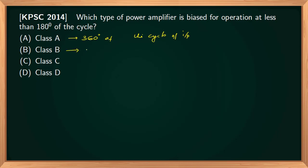Class B operates for only positive half cycle or 180 degrees of the cycle. Class C amplifier will operate only for an angle that is less than 180 degrees of the cycle, so Class C amplifier is the correct option. Class D is used for pulse application; angle is not specified in the case of Class D amplifier.